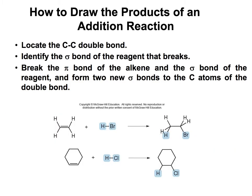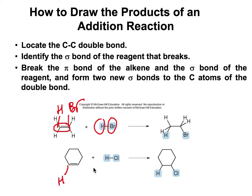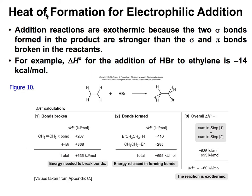So how are we going to draw the products of an addition reaction? Here we have the double bond and we're going to add these two across the double bond — one here and one here. The same happens here: we're going to add the H there and the Cl there. We'll talk about stereochemistry later, but for now this is the overall transformation we'll see in an addition reaction.